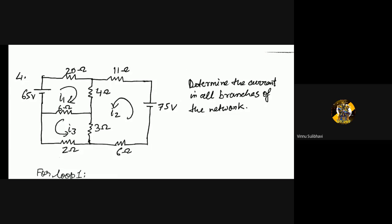So this is the next problem. Has anyone tried this problem? Ma'am, I only tried out the circuit, but I'm not sure whether the direction of the current is right or wrong. Direction of current is already given in the problem — but you're talking about sign conventions? Yes. Okay, no problem. That is why I'm clearing it out. This is Rahul, I hope? Yes, ma'am. Just tell me roughly for loop 2 — can you tell me the equation?